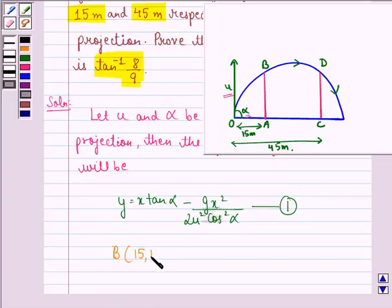Now according to the question, the particle is passing through point B that is 15, 10. The coordinates of point D are 45, 10 if O is considered as 0, 0.